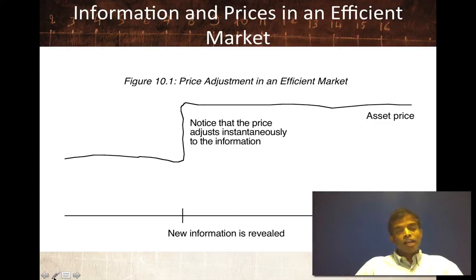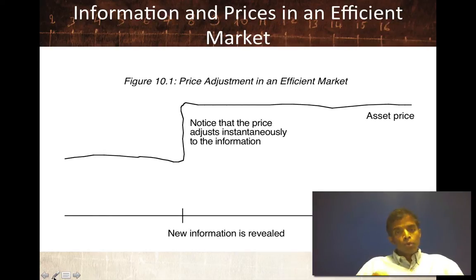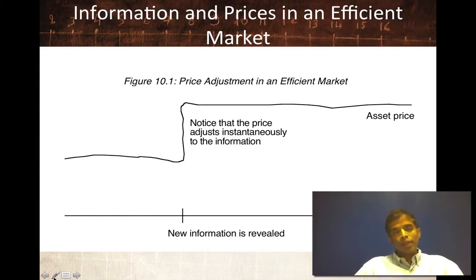The steady state, of course, will be much higher than what it was before the information came out. The key is, in an efficient market, there will be a reaction, but the reaction will be instantaneous. If it were bad news, you'd reverse this graph — the price will drop again instantaneously and then level off at whatever the new value assessed for the company will be.